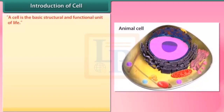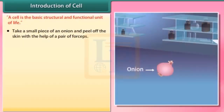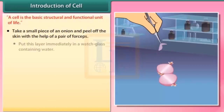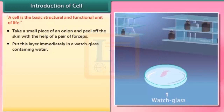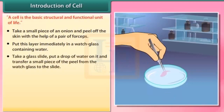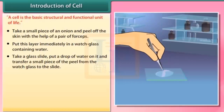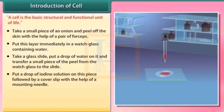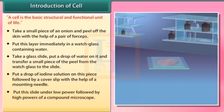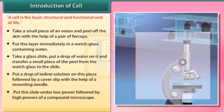A cell is the basic structural and functional unit of life. Experiment: Take a small piece of an onion and peel off the skin with the help of a pair of forceps. Put this layer immediately in a watch glass containing water. Take a glass slide, put a drop of water on it, and transfer a small piece of the peel from the watch glass to the slide. Put a drop of iodine solution on this piece, followed by a cover slip with the help of a mounting needle. Put this slide under low power followed by high power of a compound microscope.